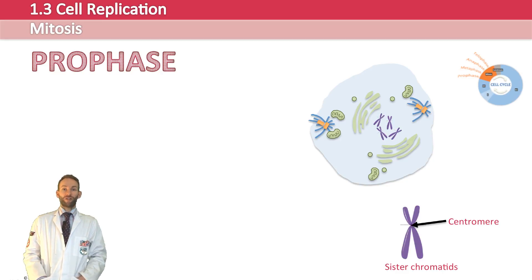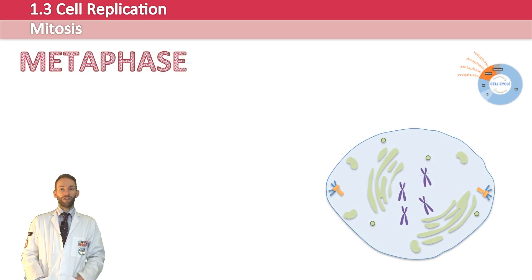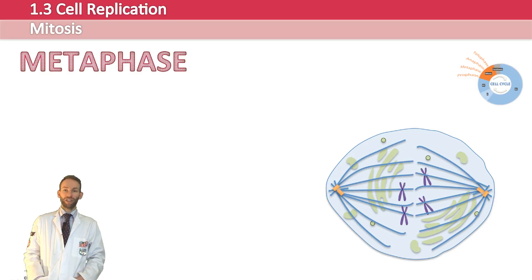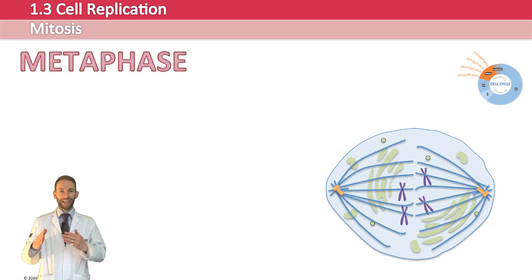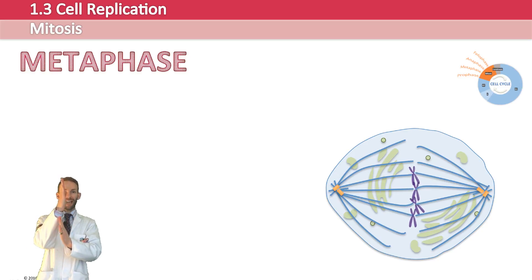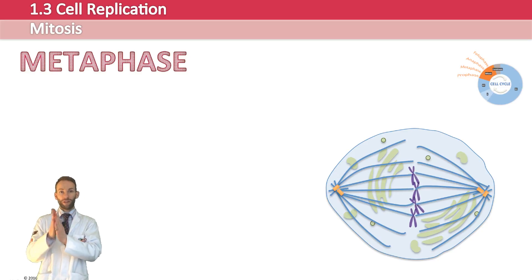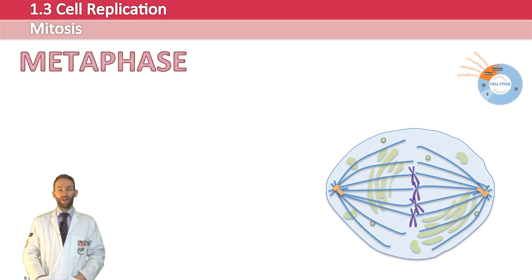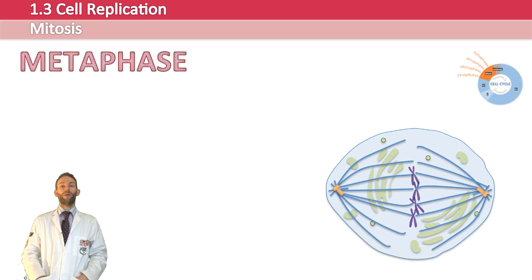In metaphase, the centrioles form the spindle, which is made up of microtubules. These microtubules attach to the centromere of each chromatid pair and push and pull them in various directions so that they eventually get organized down the middle of the cell — the metaphase plate, or equator of the cell — in a long line of double chromosomes.